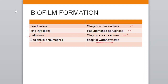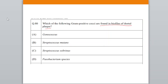Let's do the question: which of the following gram-positive cocci are found in the biofilm of dental plaque? Options: A. Gonococcus, B. Streptococcus mutans, C. Streptococcus sobrinus, D. Fusobacterium species.